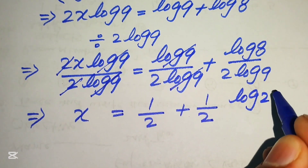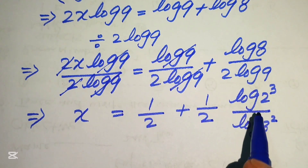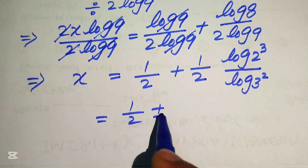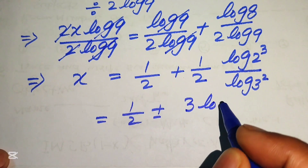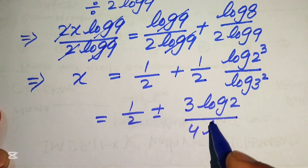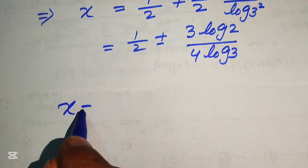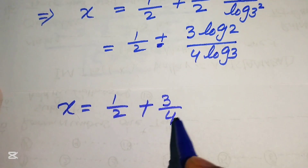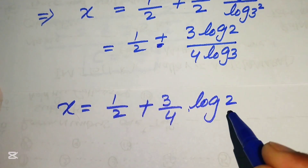We rewrite log8 as log(2³) and log9 as log(3²). Applying the power rule, log(2³) becomes 3·log2 and log(3²) in the denominator becomes 2·2 = 4·log3. Using the change-of-base property, log2 over log3 equals log base 3 of 2. So x = 1/2 + (3/4)·log₃2.